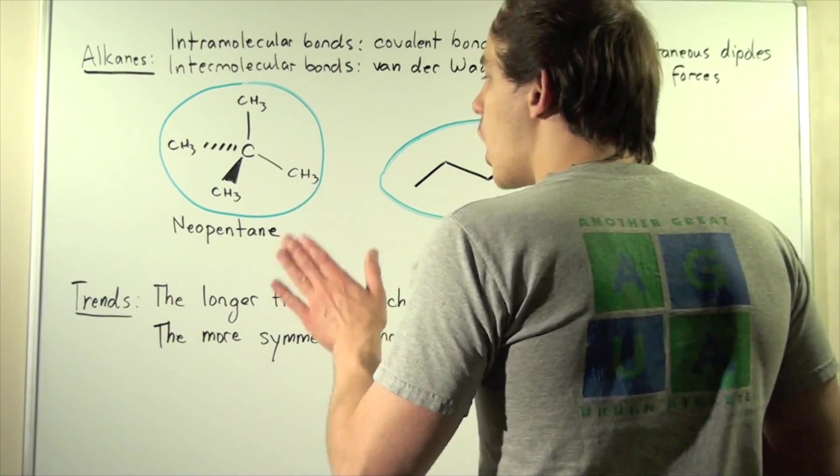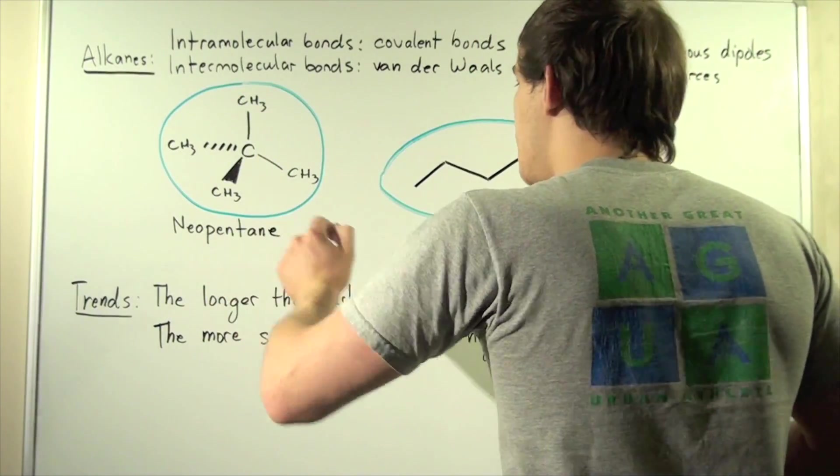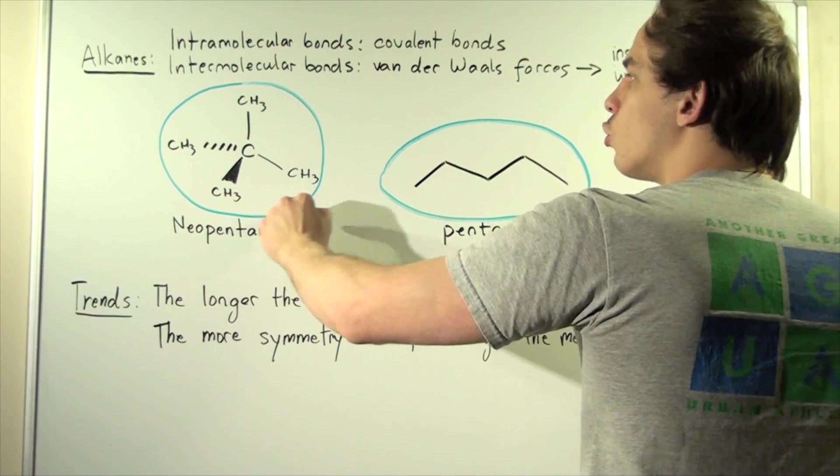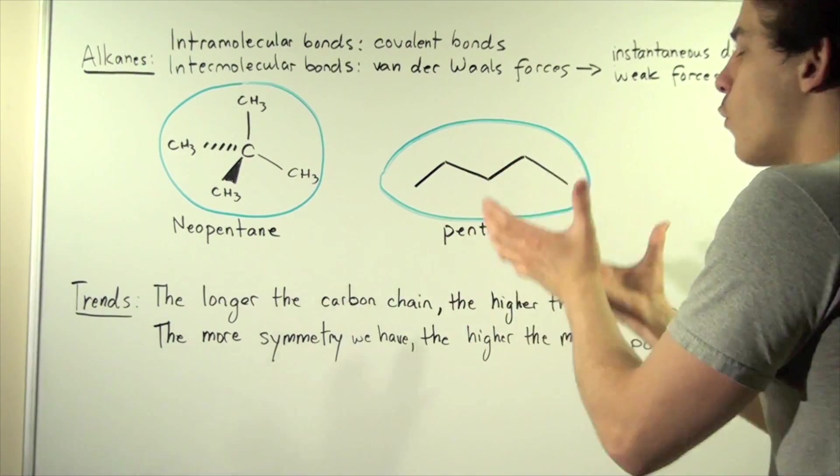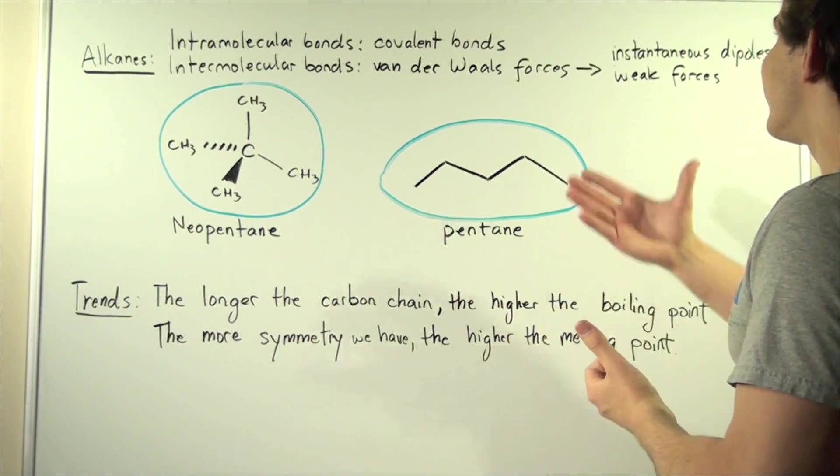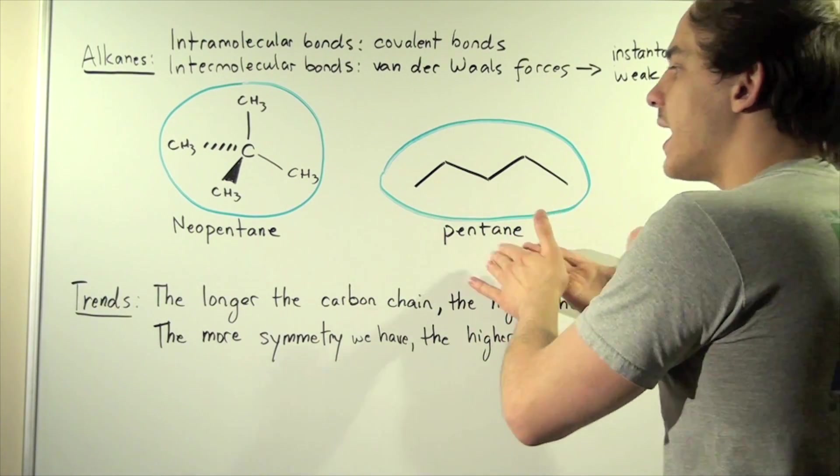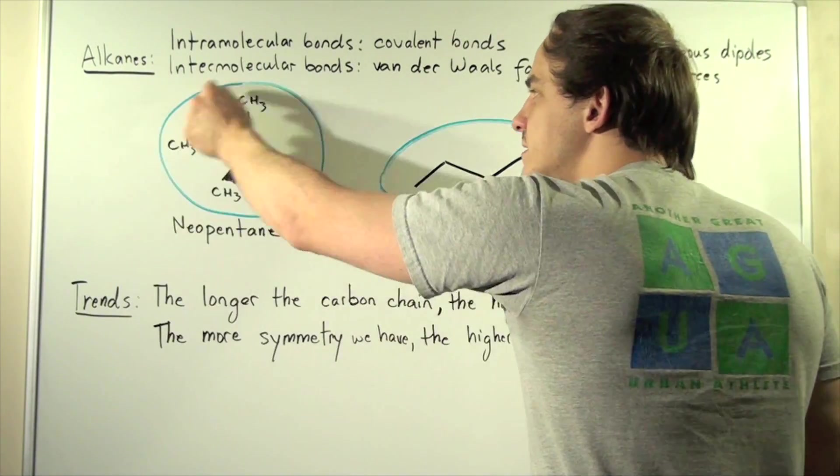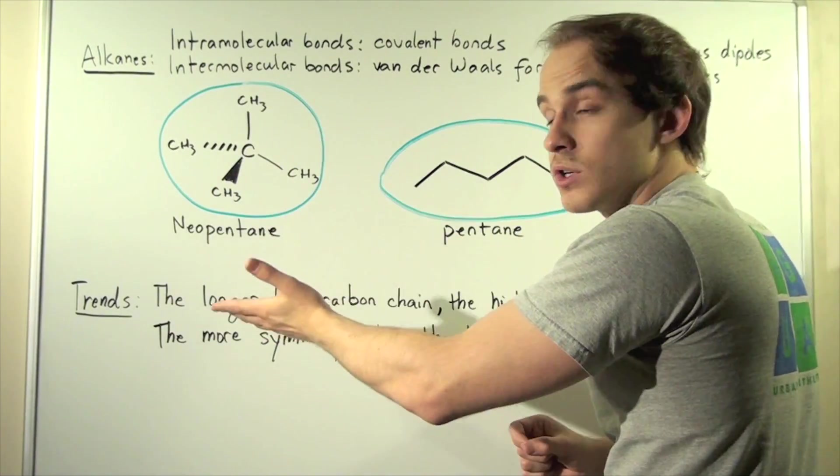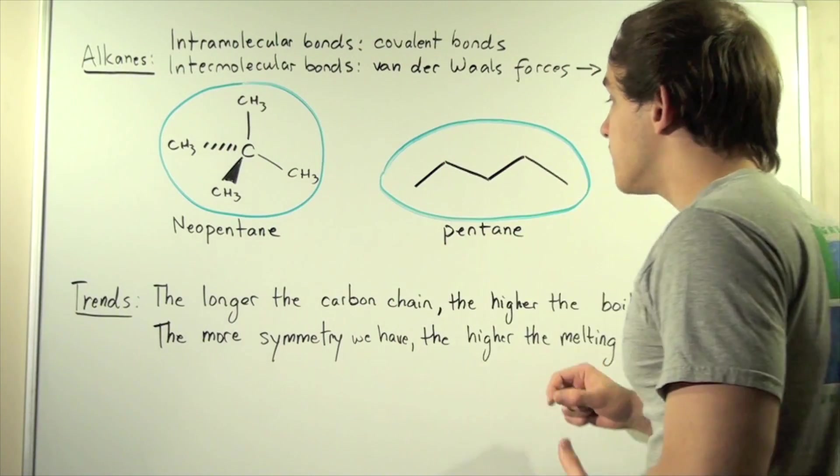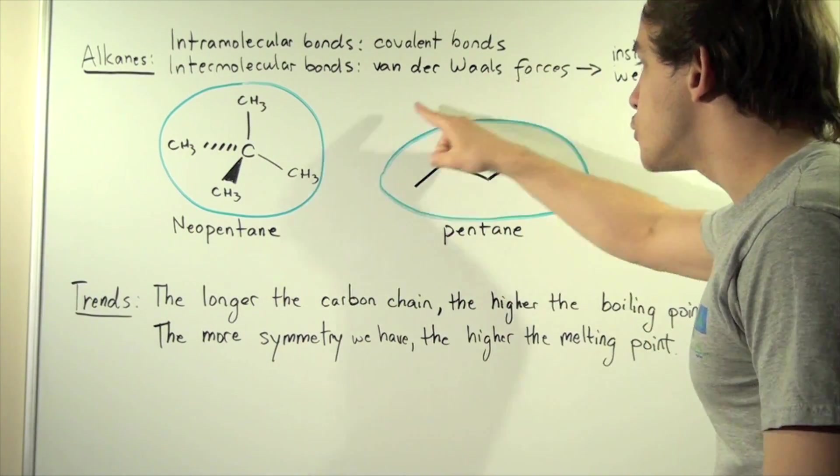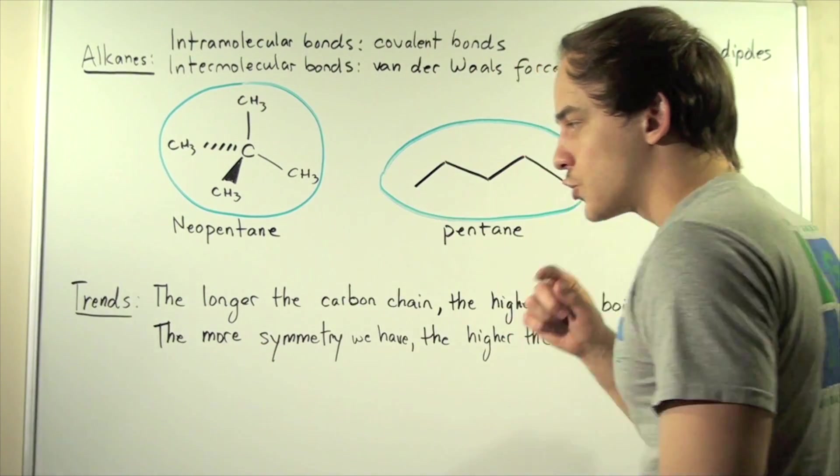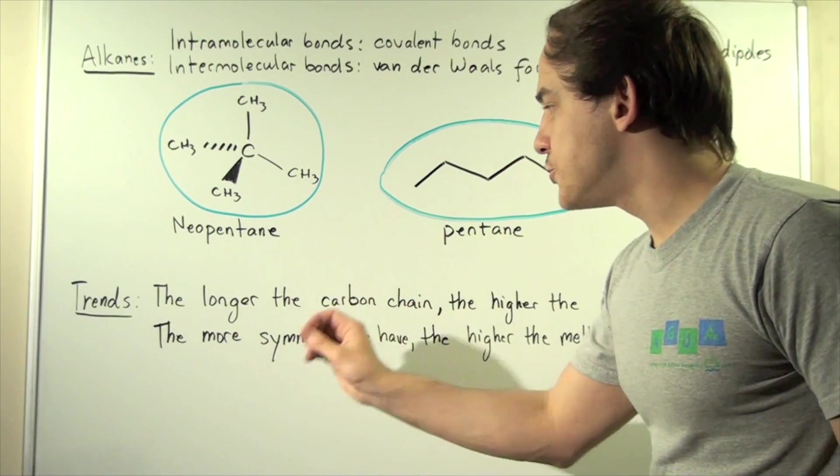So let's talk about this blue region here. This blue region on pentane and neopentane represents the van der Waals forces, the instantaneous dipoles created by these two molecules. Notice that this is relatively symmetrical—it looks like a sphere—while this has an oval shape. And this will become important when we talk about trends.